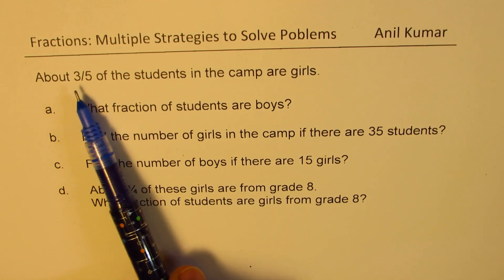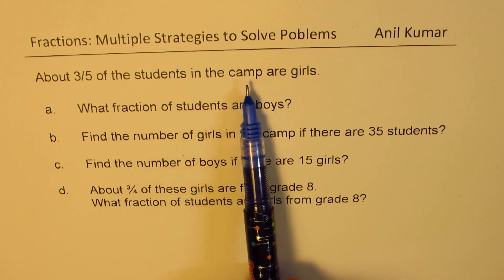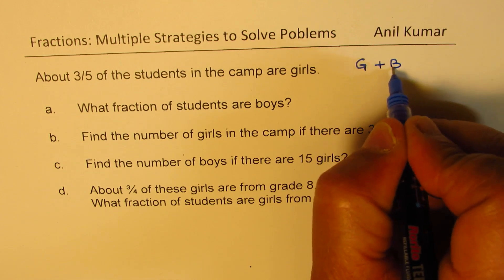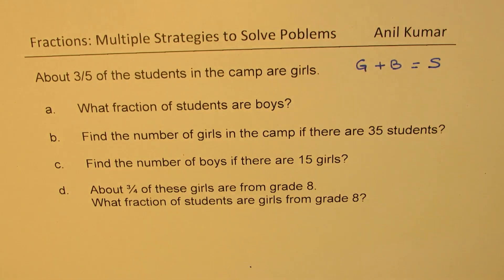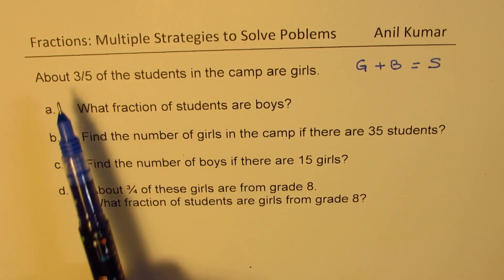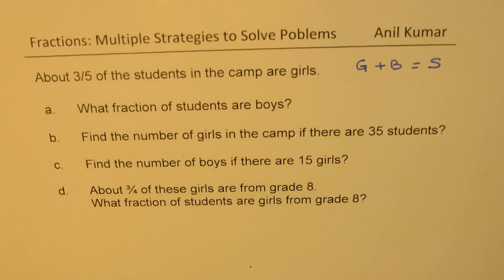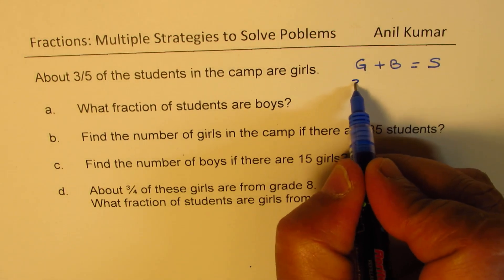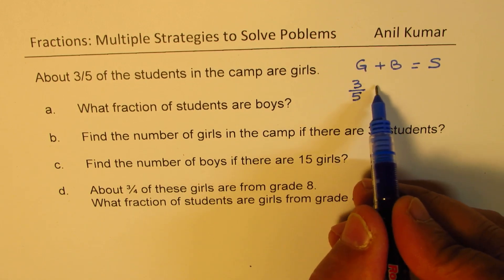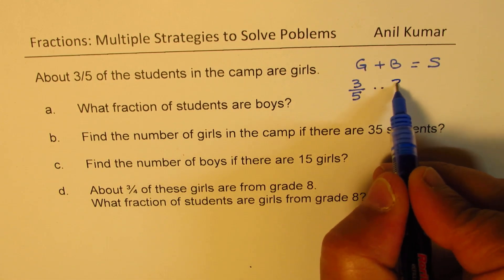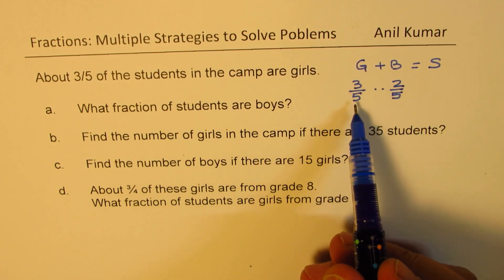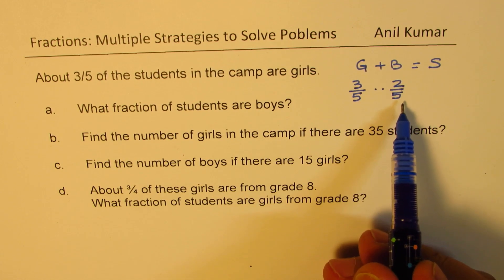Part A: About three-fifths of the students in a camp are girls. We have a combination of girls plus boys making up the students — that is what we have to keep in mind. It says, what fraction of students are boys? We know three-fifths of students are girls — that is three out of five. So out of five, three are girls, which means two-fifths are boys.